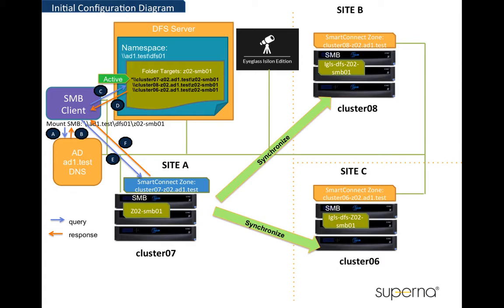The SMB client is mounting the share from the DFS target folder that refers to the site A cluster 07 share. The DFS target folder has been configured to have 3 referrals from site A, site B, and site C. In this initial diagram, the active path is set to site A, cluster 07. With Eyeglass DFS mode enabled, the same shares on cluster 08 and cluster 06 are renamed with the igls-dfs prefix.